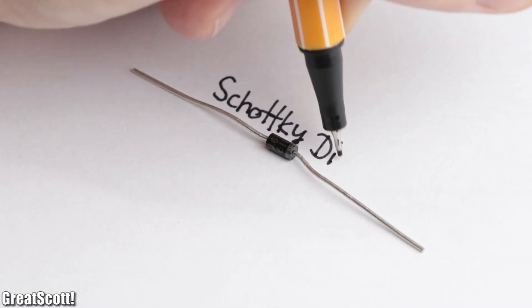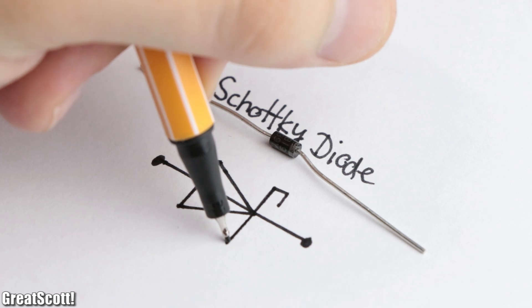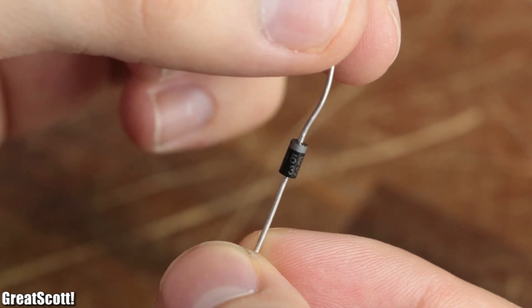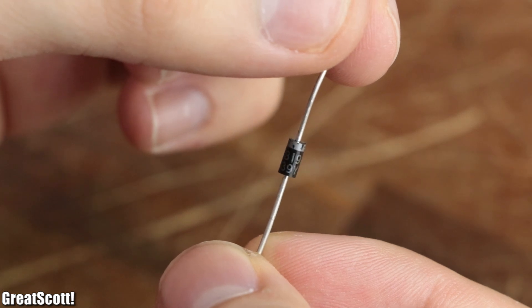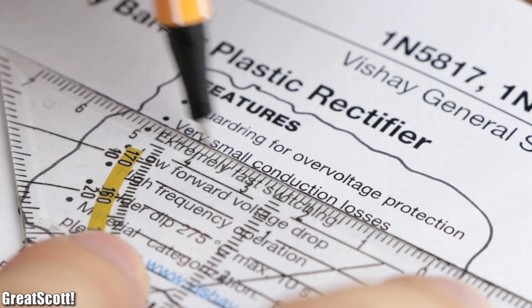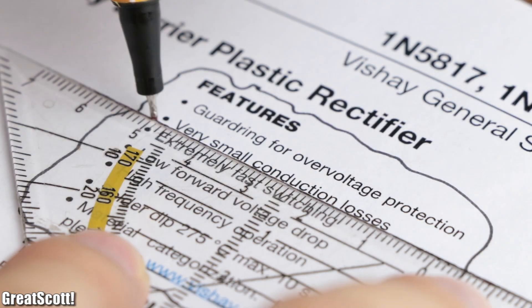Let's start off with the Schottky diode, whose symbol looks like this. As a practical example, I will be using the 1N5819 Schottky diode, whose advantages can be found in its datasheet, which is for one its small conduction losses.